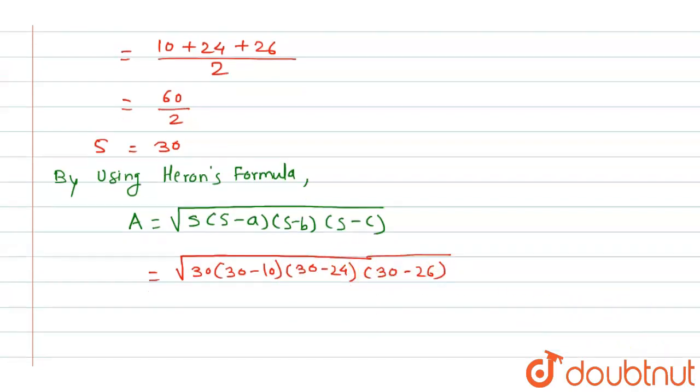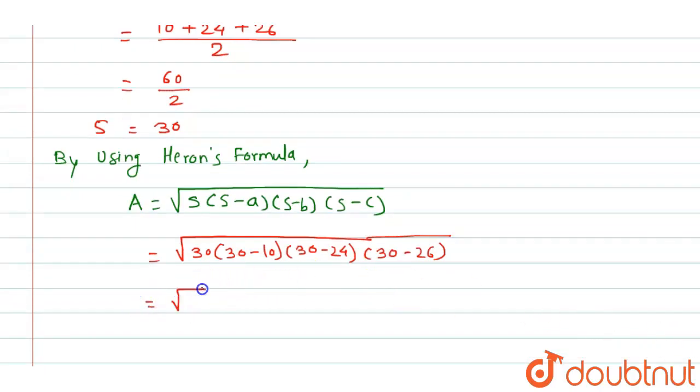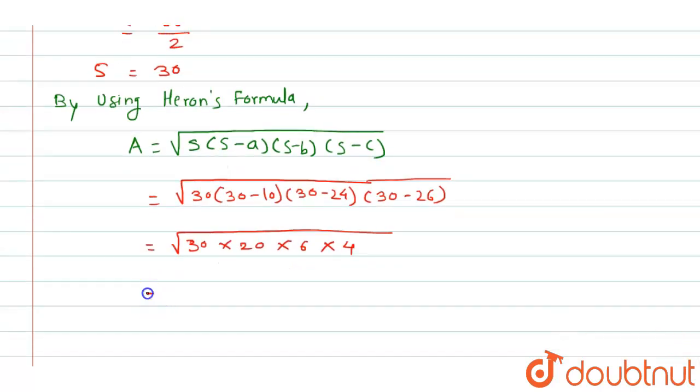Let's simplify: √[30 × 20 × 6 × 4]. We can factor these: 30 = 6 × 5, 20 = 5 × 4, and keep 6 × 4 as is. This gives us √[6 × 6 × 5 × 5 × 4 × 4]. So finally,